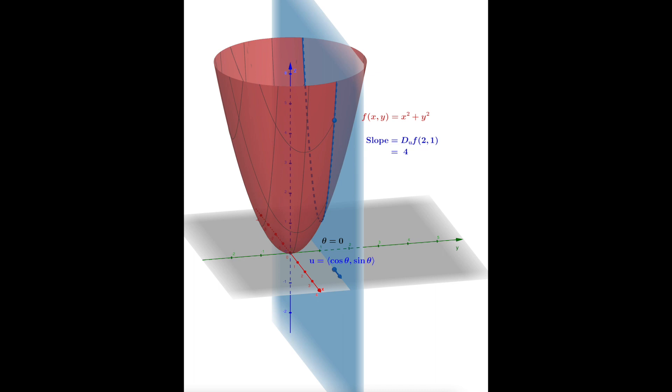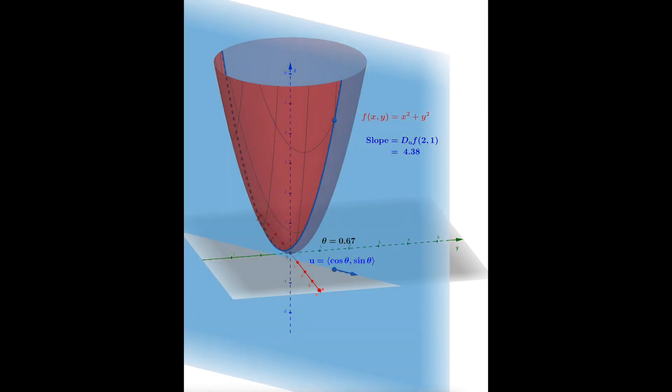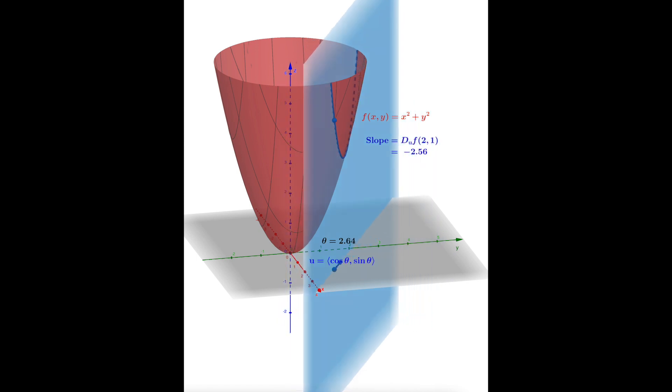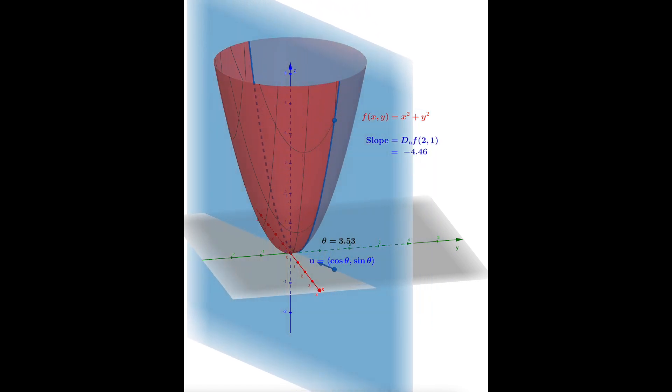Now what we're going to do in a moment is vary theta from 0 to 2π and track how the slope changes. So here it goes—as theta increases, this moves the blue plane around. Notice that as we're going around, the slope right now is decreasing, and the orientation of the plane means that slope is going to be negative as we're spinning around here.